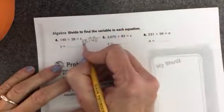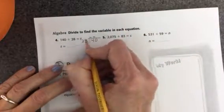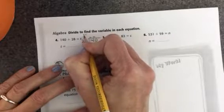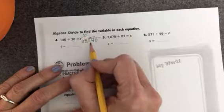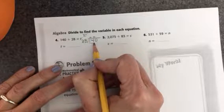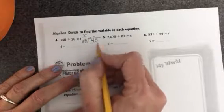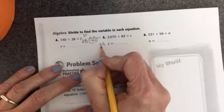So what I'm going to need to do is think, 28 is really close to 30. So I'll ask myself, how many times does 30 go into 14? Or how many times does 3 go into 14? I think it's going to be about 4 times.